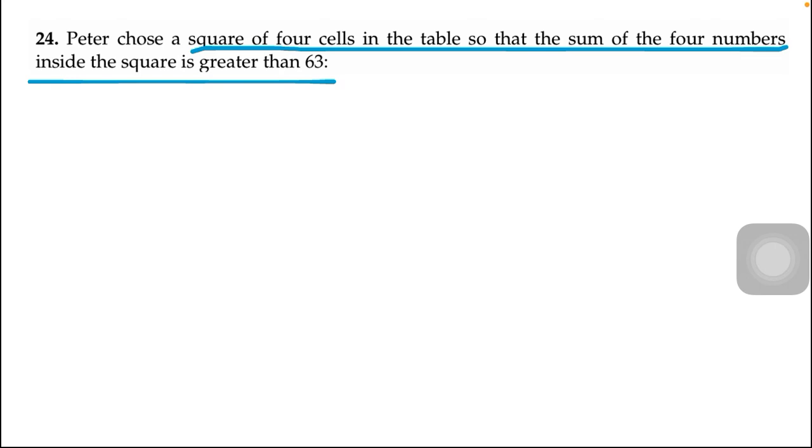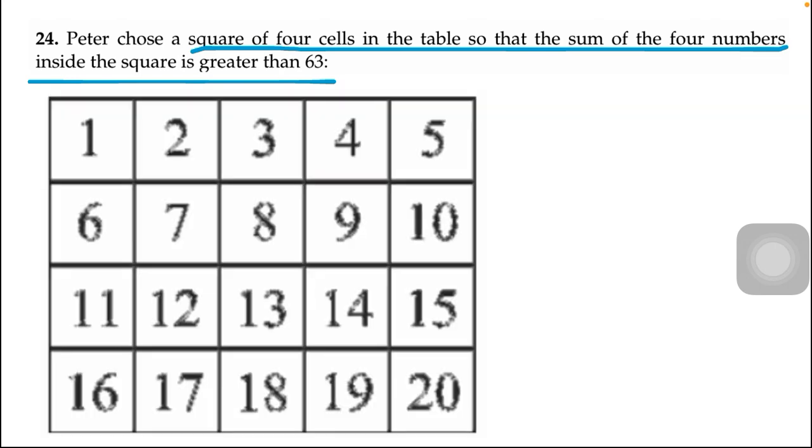Now what we are going to do is move into the solution of this question. We already know that from this table which I have zoomed in, we have to choose a square which consists of four numbers and the numbers contained in that square must be greater than 63.